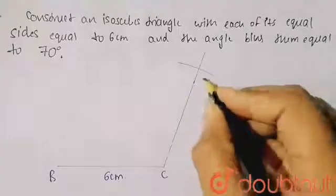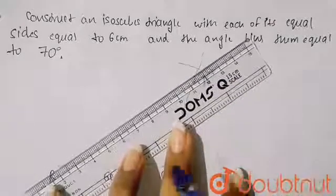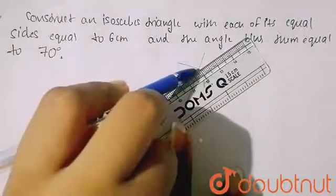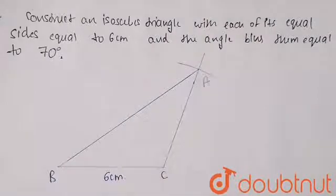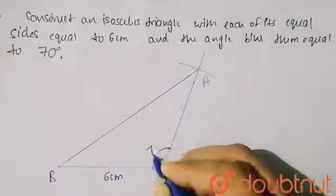Now take this point as point A, and I will join points A and B. So this is my required triangle ABC where this angle is 70 degrees.